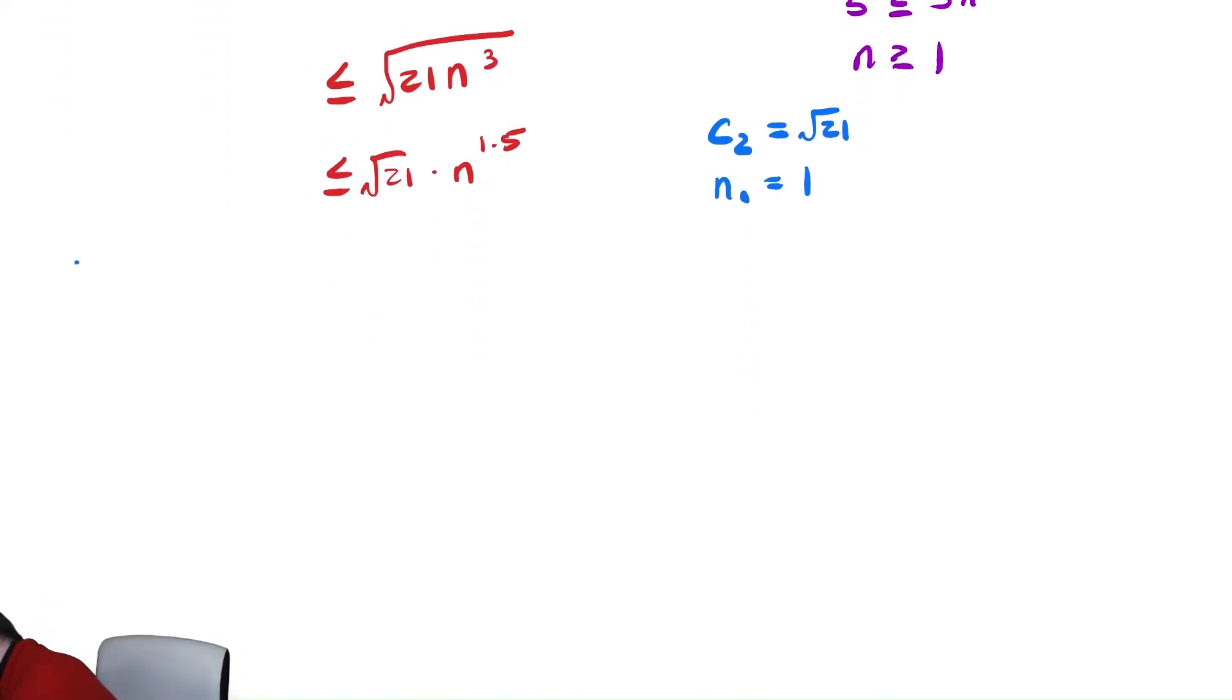Let's bound below now. Bound below, which we also might just write down that we're showing that it is an omega of n to the 1.5. Either of those is fine.